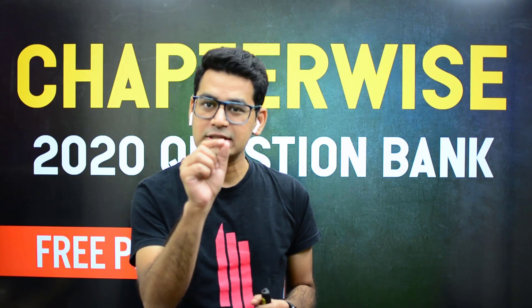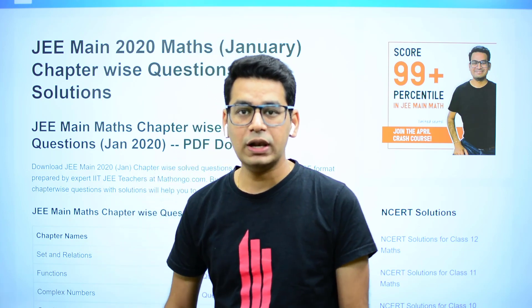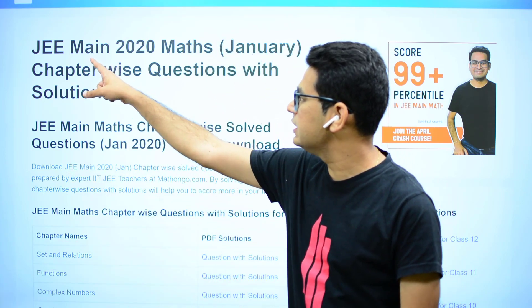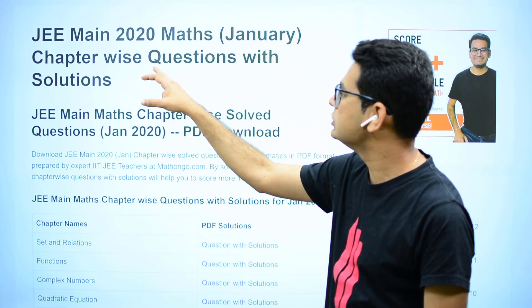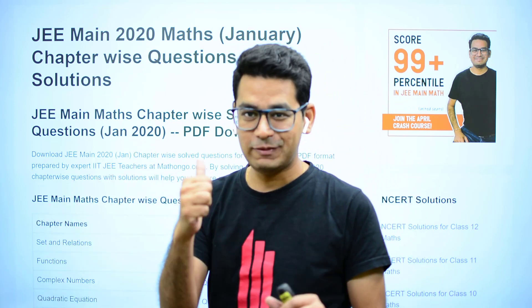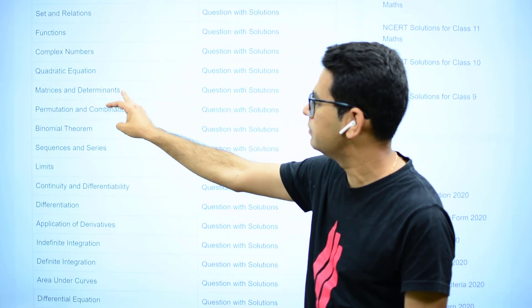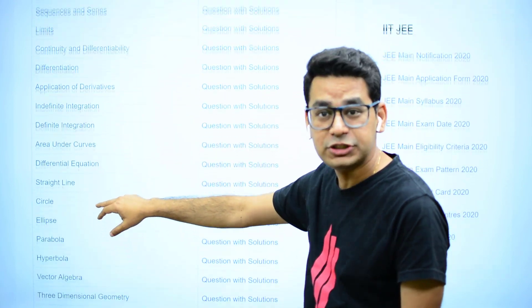Let me click the link so you can see what the page looks like, so that all of you guys can be on the same page. Once you click that particular link from the description box, you will land on a page which clearly says 'JEE Mains 2020 Maths January Chapter-wise Questions with Solutions.' All the chapters are mentioned — Relations & Functions, Complex Numbers, Quadratic Equations, Determinants, and more. You just have to click the chapter and it will take you to a page where you will need to sign in.